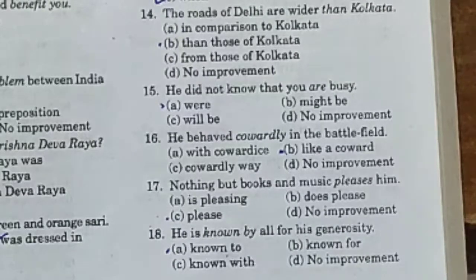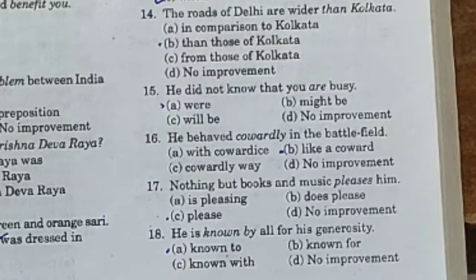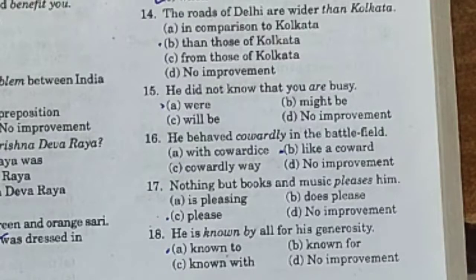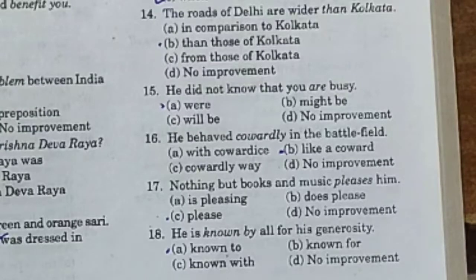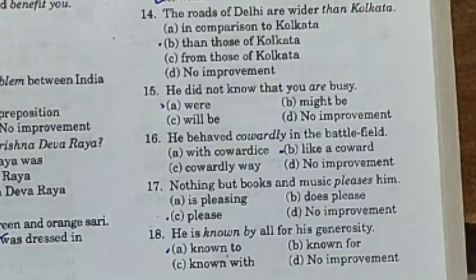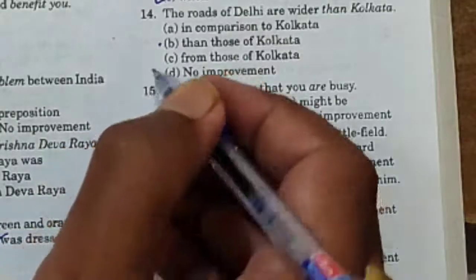Now sentence number 14: 'The roads of Delhi are wider than Kolkata.' Option A: in comparison to Kolkata. Option B: than those of Kolkata. Option C: from those of Kolkata. Option D: no improvement. The roads of Delhi are wider than those of Kolkata — 'those of' needs to be added after 'than'. Option B is correct: 'than those of Kolkata'.